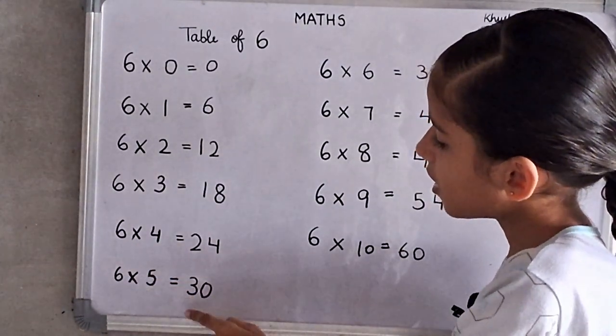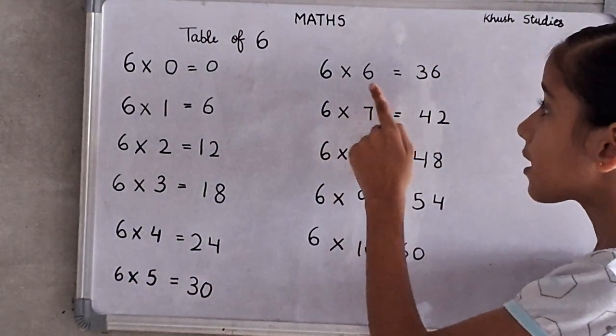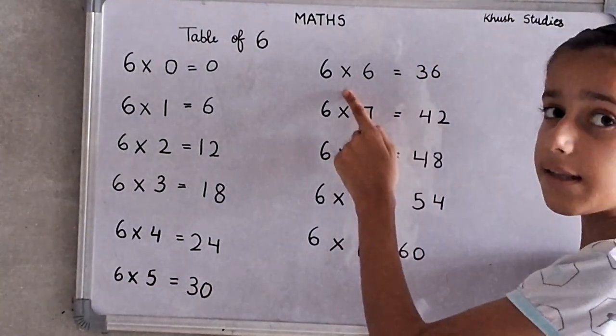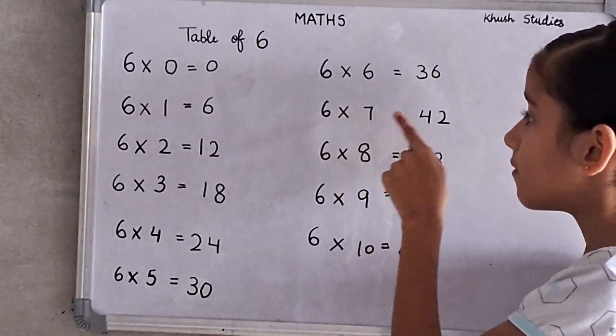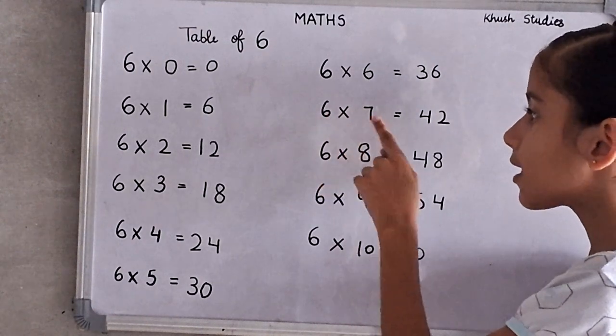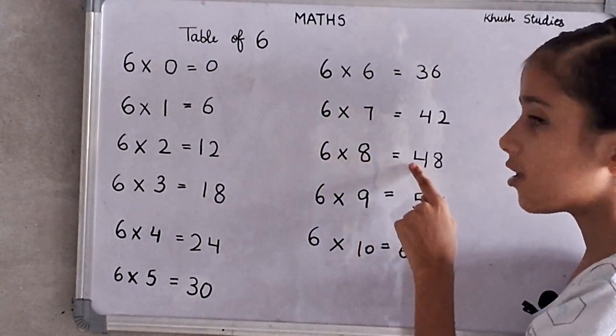6 fives are 30. 6 fives are 30. 6 sixes are 36. 6 sixes are 36. 6 sevens are 42. 6 sevens are 42. 6 eights are 48.